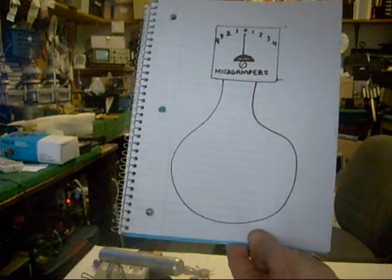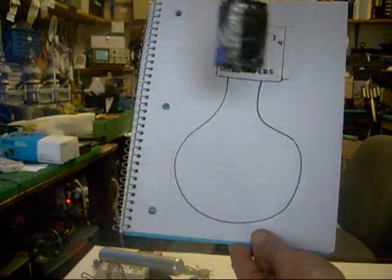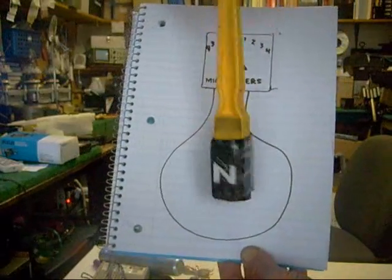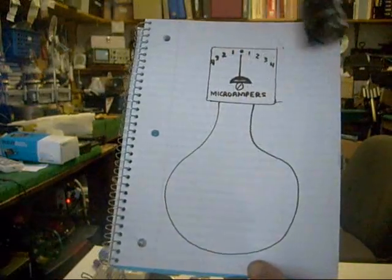Now, believe it or not, if you had a single strand of wire hooked up to a microamp meter, and you took a magnet and spun it around inside that wire, you would actually generate electricity which you could measure.